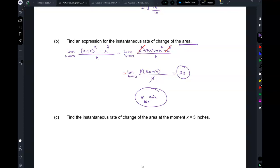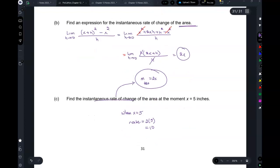Find the instantaneous rate of change of the area at the moment x equals 5 inches. Instantaneous rate of change, that's this. x at the moment x equals 5 inches. So when x equals 5, the rate is 2 times 5 which is 10. So it's 10 inches squared per inch. So it's 10 square inches per inch. So the minute it's at 5 inches, it's expanding at a rate of 10 square inches per inch.